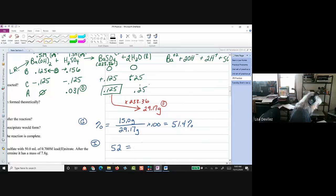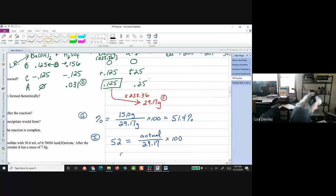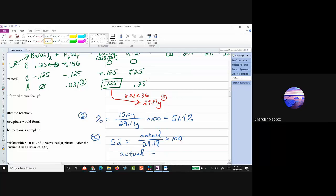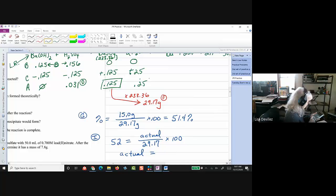So, if it had a 52% yield, we have our actual, I need to change that problem. 1.17 times 100. So, this says that our actual, it's not going to be much different, actual would be, 1.22 times 29.17. So, 15, 15.2 grams would be if it had a 52% yield.